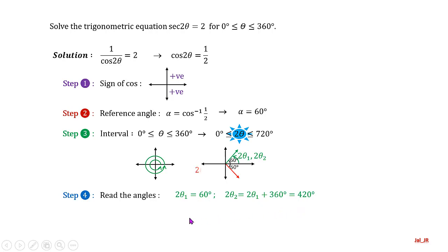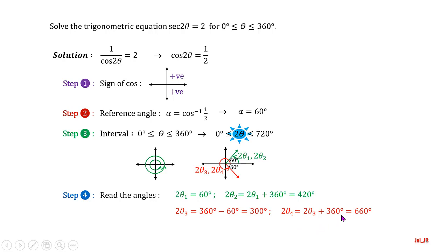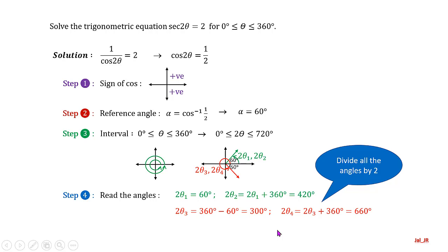2θ₃ = 360 − 60 = 300 degrees, and 2θ₄ = 300 + 360 = 660 degrees. Don't forget to divide all the angles by 2, because we want to solve for θ. So altogether, we have 4 solutions for θ: 30°, 150°, 210°, and 330 degrees.